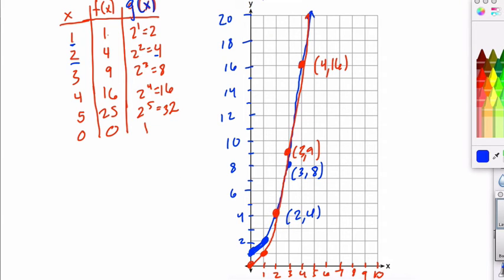Now, we know that g of x is going to have a higher value, higher height than f of x. Once x reaches 5, you can see that g of x is higher than f of x.